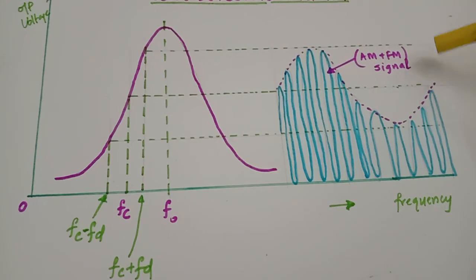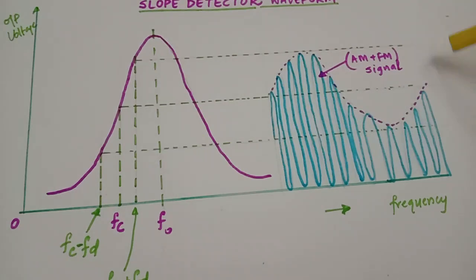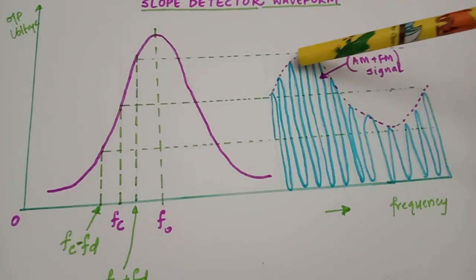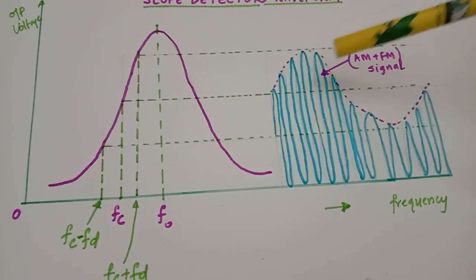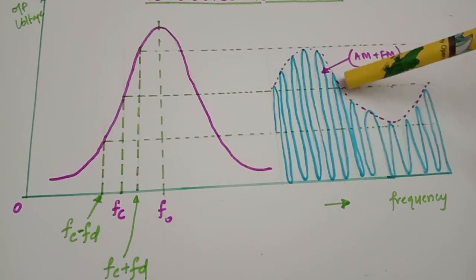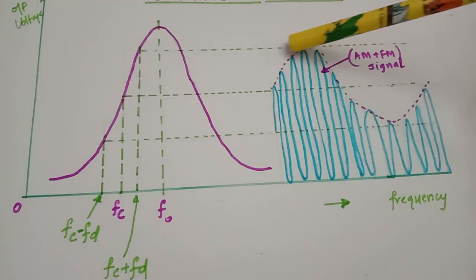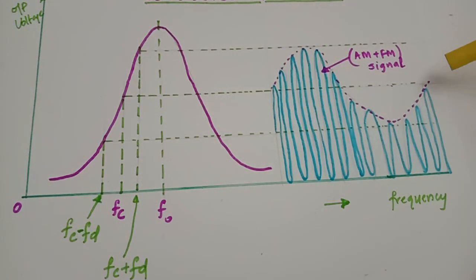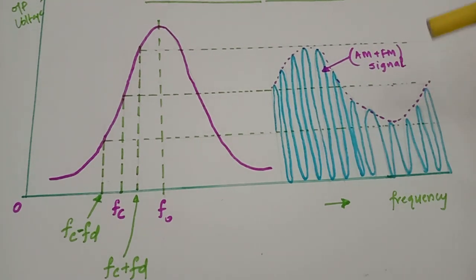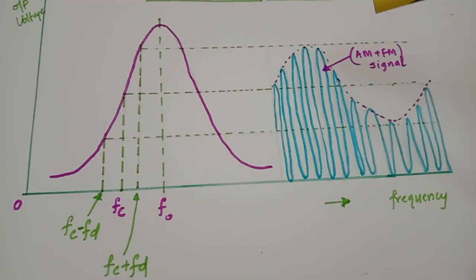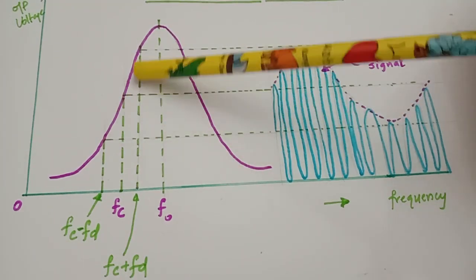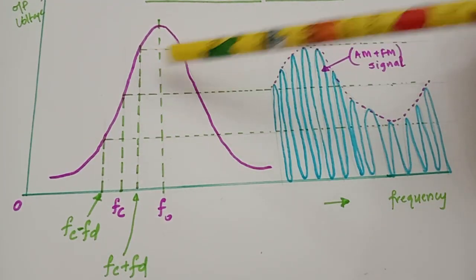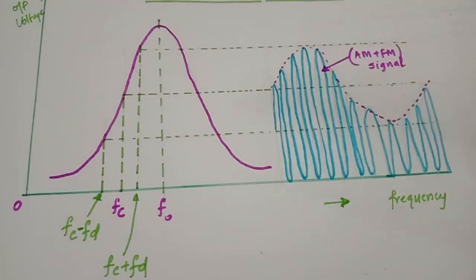This AM plus FM signal is fed to the input of an AM detector. The AM detector — a diode detector — easily recovers the envelope, and the modulating signal is separated from the FM modulated wave. This is the method by which a slope detector detects an FM modulated wave. Since it operates on the slope of the response curve, we call this circuit a slope detector.